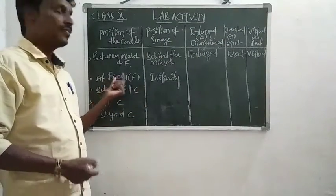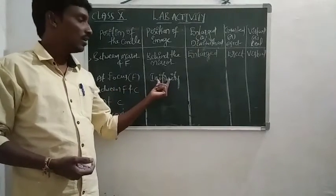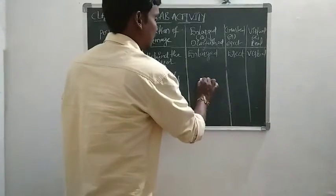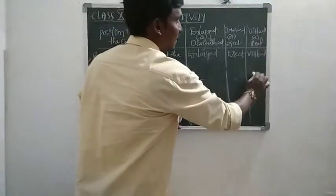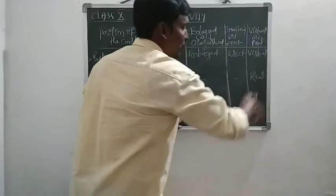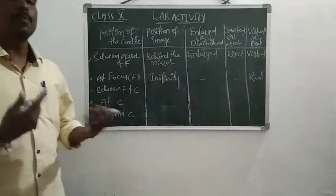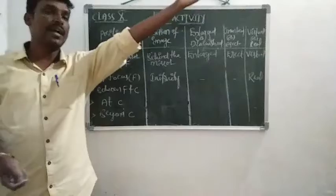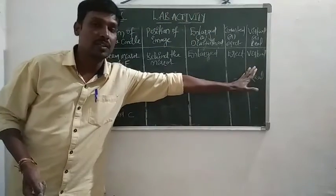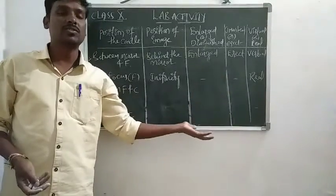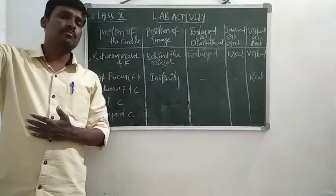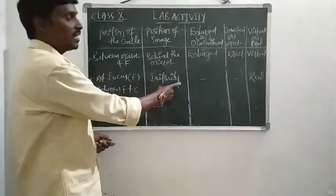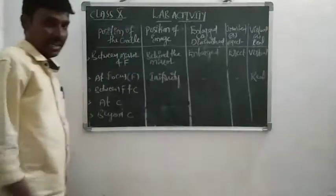When we are taking the position at focus, the object image position is at infinity. So we don't know what happens exactly. But that is also a real image, because the image is formed on a screen only — we just don't know the position or the distance. That is infinity. When placing the object at focus, the image is at infinity and that is a real image. We will not get it on the screen at a specific place, but anywhere on the screen. This is the second case.